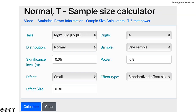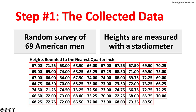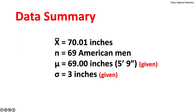Here are the 9 inputs plugged into the Statistics Kingdom calculator. The output shows that a sample size of 69 observations yields 80% statistical power. Step 1: Collect the Data. Based on the a priori statistical power calculation, a random sample of 69 American men was collected. Heights were measured with a stadiometer and rounded to the nearest quarter of an inch. Data Summary: the sample mean for 69 men is 70.01 inches. The population mean is presumed to be 69 inches and the presumed population standard deviation is 3 inches.